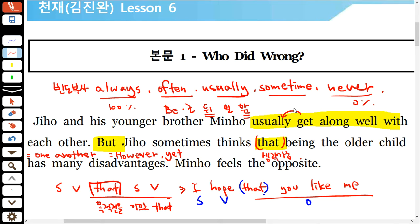that절 속에서 주어는 you, 동사는 like예요. 본문에서 'being the older child' 부분이 주어가 되는데, 동명사가 주어일 때 단수 취급해요. 동명사 주어, to부정사 주어는 단수 취급이에요. 그래서 대절 속 주어는 being이고 동사는 has가 돼요. 절대 have가 될 수 없는 자리예요.